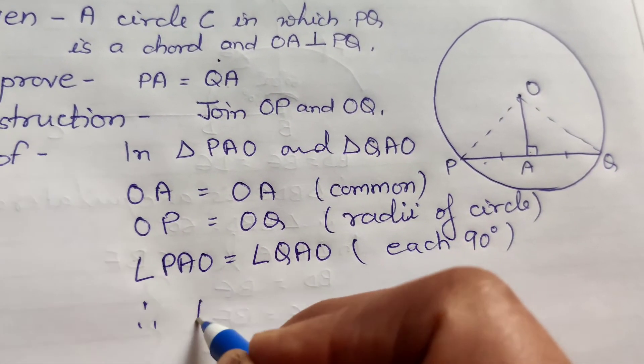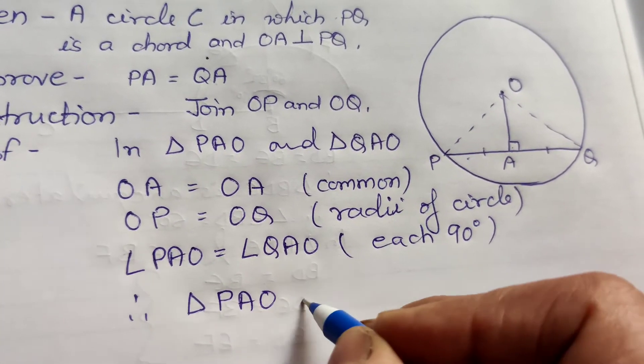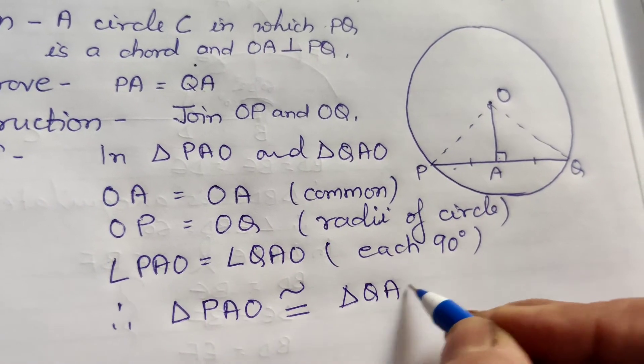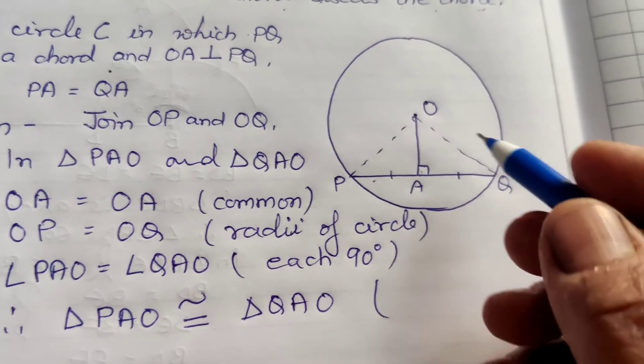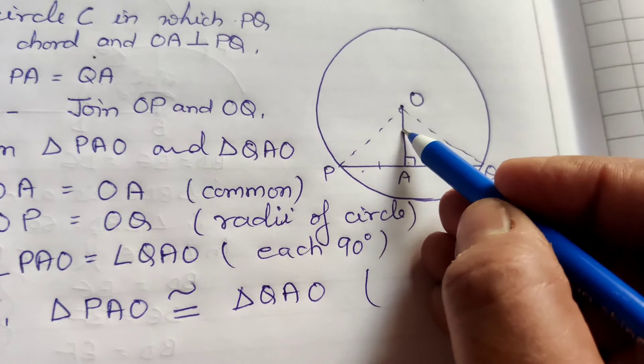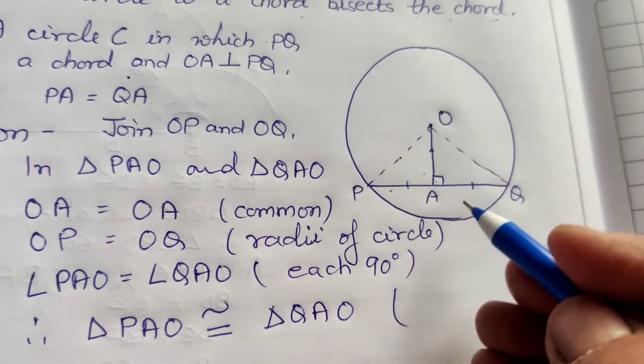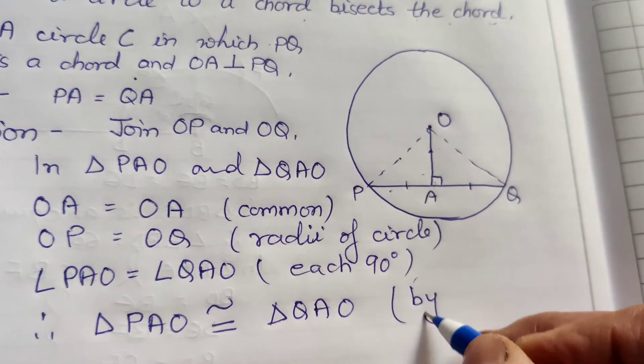Therefore, triangle PAO congruent to triangle QAO. By which criteria? Koun sa criteria laga is me? S, yhe bhala kya hai? Side, yhe hai hypotenuse or 90 degree. It means by RHS.